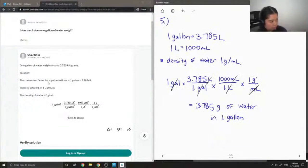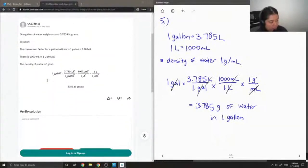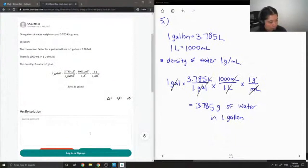They have the conversion factor for 1 gallon to liters is 1 gallon is equal to 3.7854 liters. There's 1,000 milliliters in 1 liter of fluid, and they added the density of water, which is 1 gram per mil. So they got 3,785 grams.